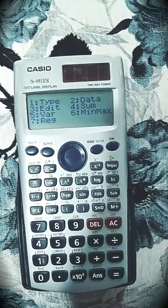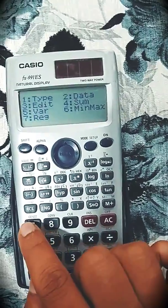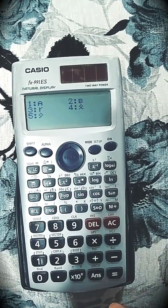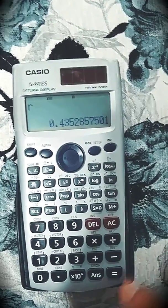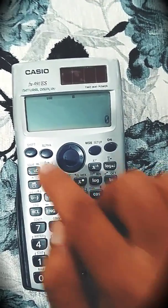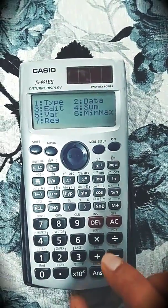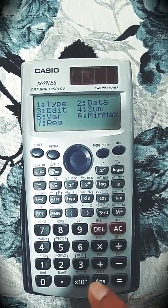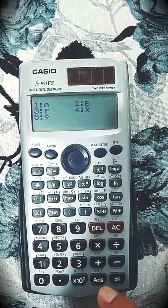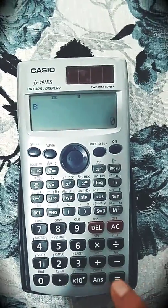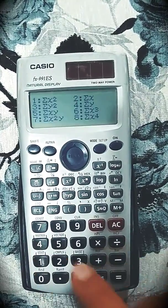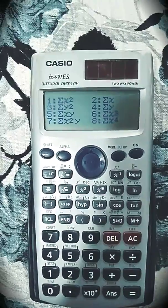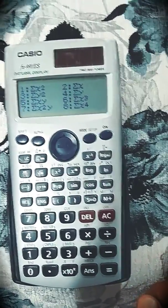Press AC again. Shift 1 is used for statistics mode. If I want to calculate coefficient of correlation, that is available at 3 number. Press 3, give equal to. We will get the answer of coefficient of correlation. Again, if I want to calculate the coefficient, for that go into the 7 number regression and let's calculate the constant, which is the variable.